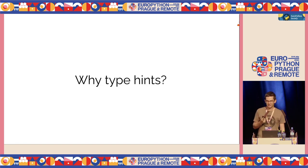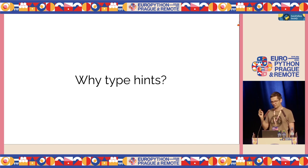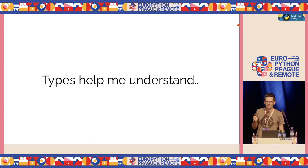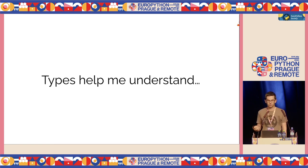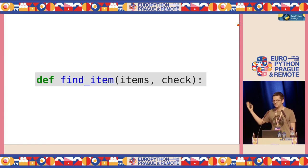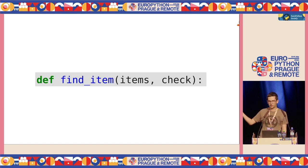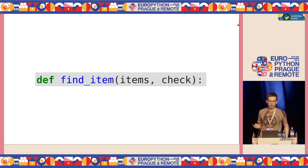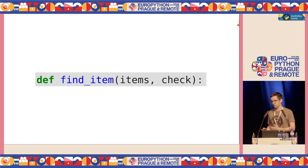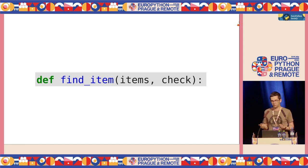Why type hints? For me, the most important reason is that types help me understand code. If I see a function signature, I want to be able to find out what it's doing from the signature alone. But without type hints I have no idea — what is 'items'? What is 'item'? What is 'check'? Is it a boolean? What does the function return? Without type hints, I have no idea.